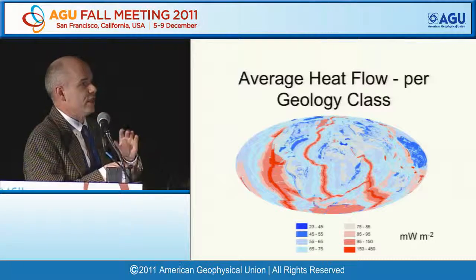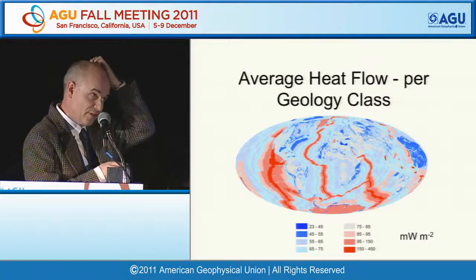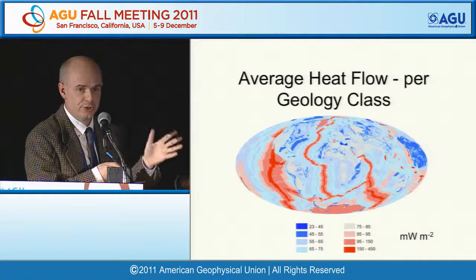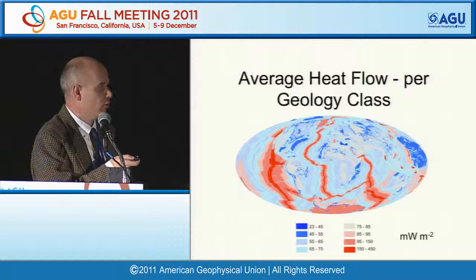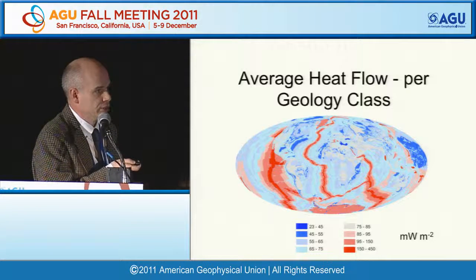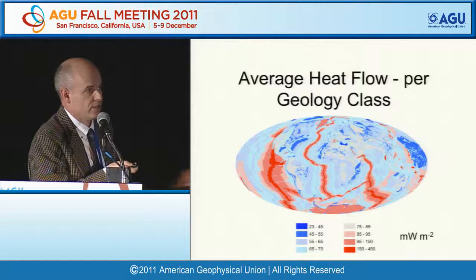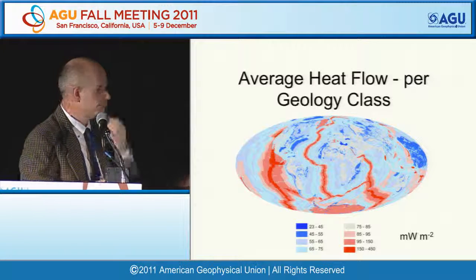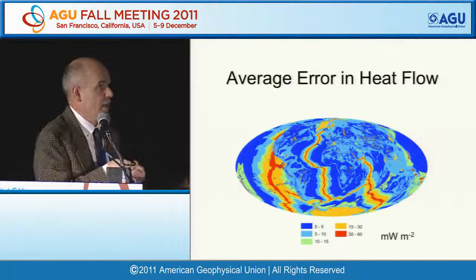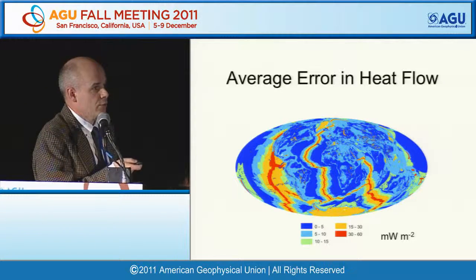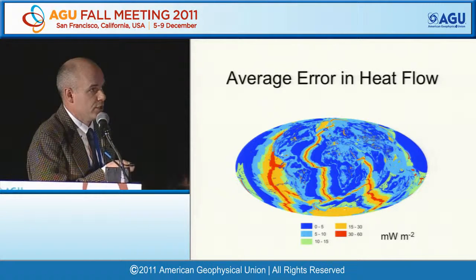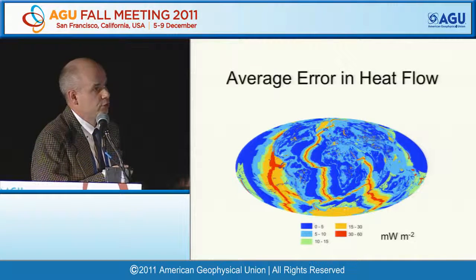If the correlation were absolutely true, the map of Earth's heat flow would show clearly that the dominant heat flow is in the young oceans, while the lowest heat flow is in the old oceans. The statistical errors are highest in the young oceans and in the glacier/Antarctica geology class.